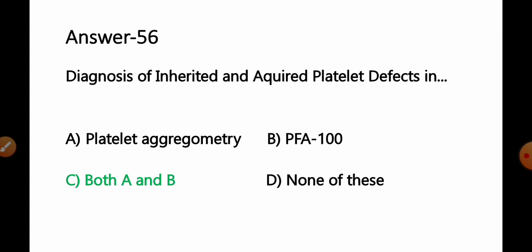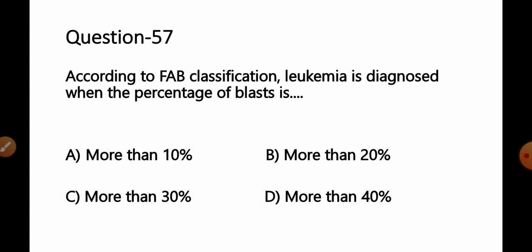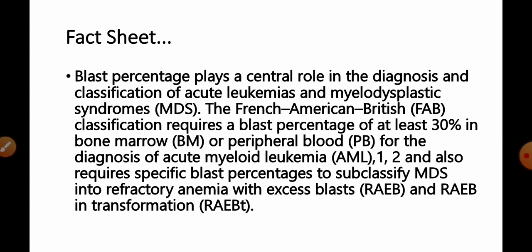Question number 57: According to FAB classification, leukemia is diagnosed when the percentage of blast cells is — option A: more than 10%, B: more than 20%, C: more than 30%, D: more than 40%. Blast percentage plays a central role in diagnosis of acute leukemias. The French-American-British (FAB) classification requires a blast percentage of at least 30% in bone marrow or peripheral blood for diagnosis of acute myeloid leukemia (AML).